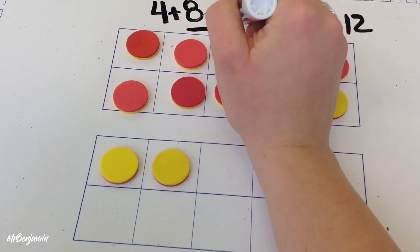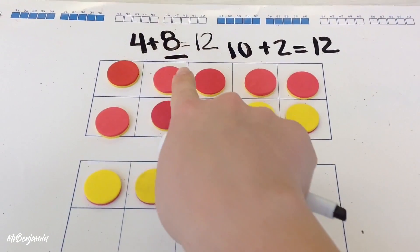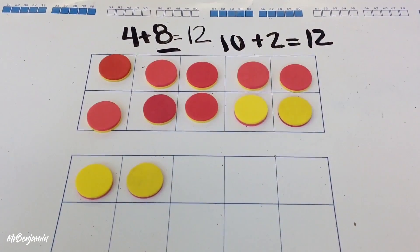Now I know that 4 plus 8 equals 12. And 4 plus 8 is the same as 10 plus 2.